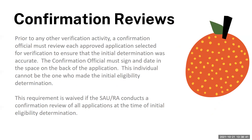The determining official should ensure that the application is complete with all the required information, and performs the math for the eligibility determination. Please refer to the eligibility manual for guidance. The confirming official must sign and date the back of the income eligibility form to document that they have checked the eligibility of the application. You can attach your calculations to the copy of the application selected for verification and put notes on the application, but please do not make any changes to the information that the household has entered.